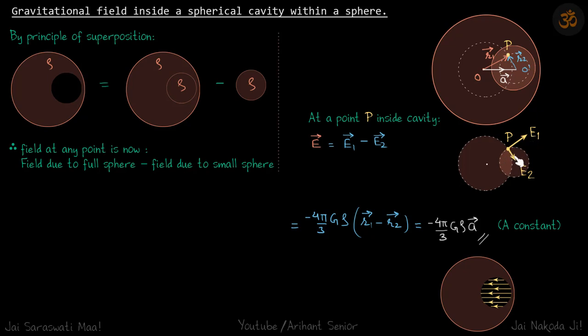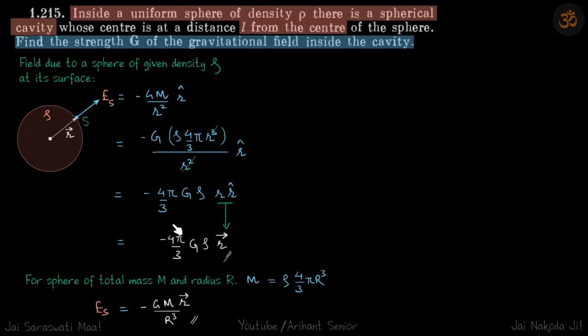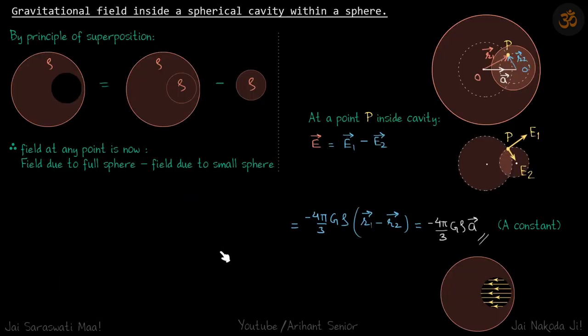Field at point P is E1 vector minus E2 vector. E1 vector is in the direction of r1 vector. We have already found the values of the fields in vector form. E1 vector due to the sphere will be minus 4 by 3 G rho r1 vector.